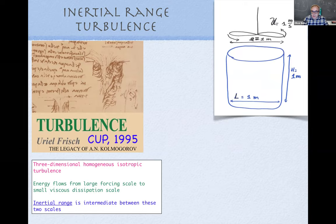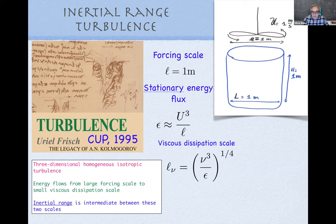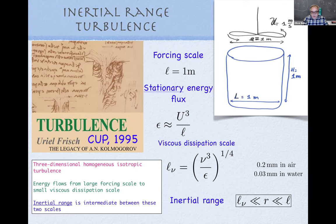Imagine a one-meter experimental setup with a propeller one meter in diameter spinning at one meter per second. The forcing scale is one meter; the energy flux ε scales as u³/l. From the viscosity you can estimate the viscous dissipation scale — about 0.2 mm in air or 0.03 mm in water — so there are at least three orders of magnitude between the forcing and dissipation scales: a huge inertial range. It therefore makes sense to consider scales where neither forcing nor dissipation is directly relevant.